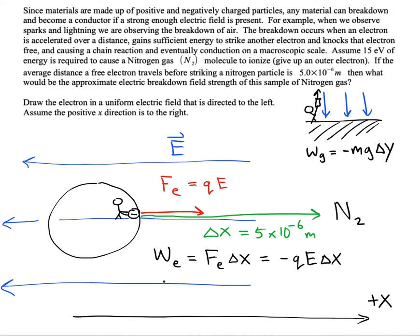In our problem, we know how much work is required: 15 electron volts. And we just have to convert electron volts to joules. Now, one electron volt is defined as 1.6 times 10 to the minus 19 joules.